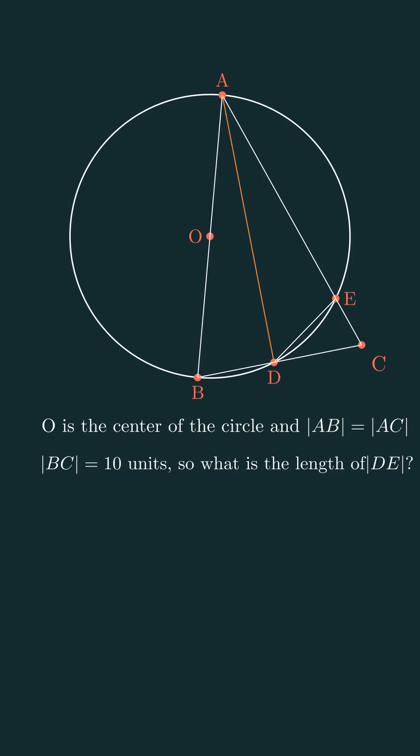Let's find angle ADB. It's an inscribed angle that intercepts the diameter, and as we know, an inscribed angle that sees the diameter is 90 degrees.